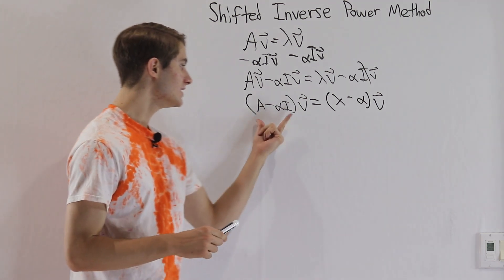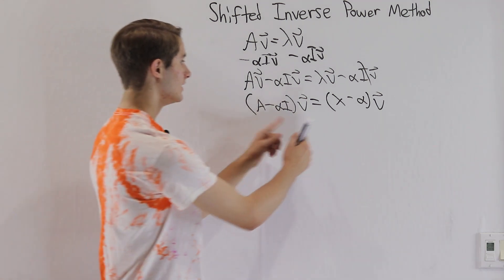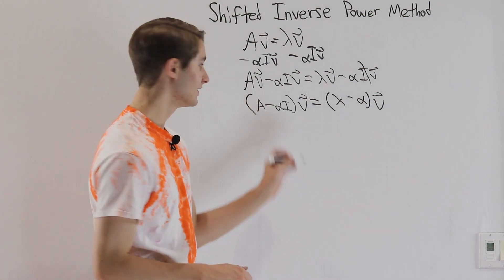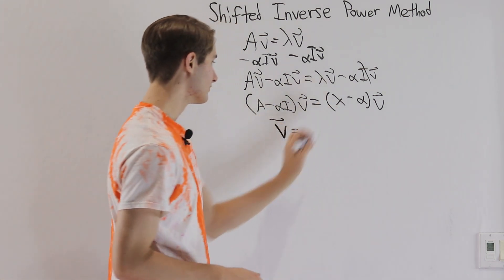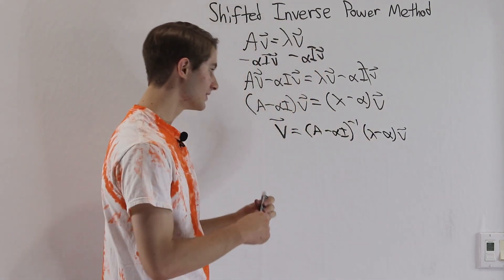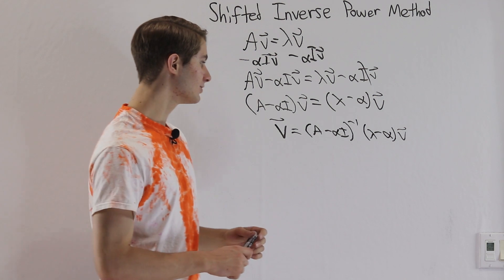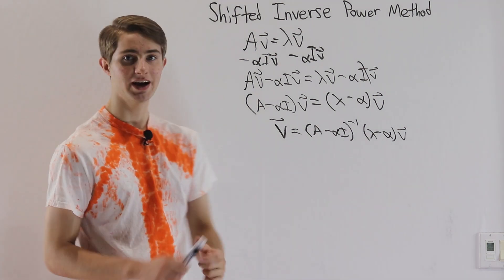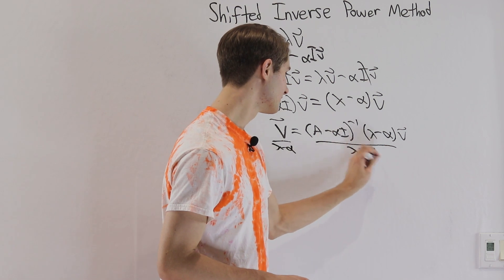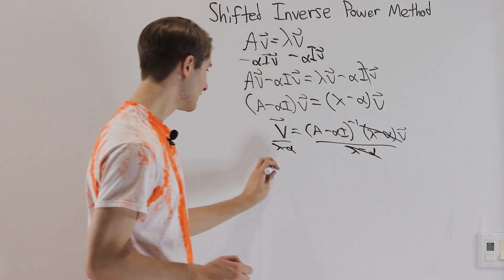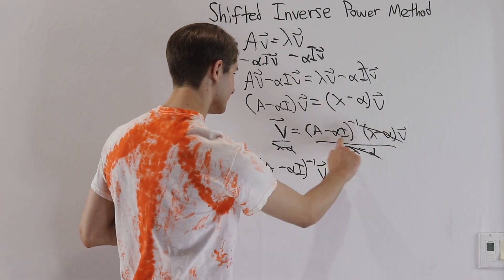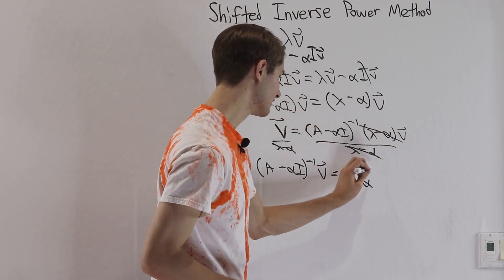Now we're going to take the inverse of (A minus alpha I) and multiply it on both sides. The inverse times the original matrix gives us just the vector v. On the right side we have (A minus alpha I) inverse times (lambda minus alpha) v. Since lambda minus alpha is a constant, we can factor it out and divide both sides by it. We get that (A minus alpha I) inverse v equals 1 over (lambda minus alpha) times v.